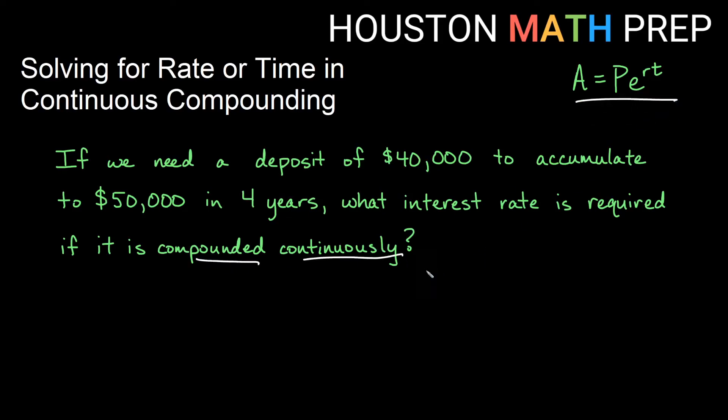So again, compounding continuously tells us we're using that. Our deposit of $40,000 is our P, our principal. We need to accumulate to an ending amount A of $50,000. Our t this time is four years. We need to know what interest rate. So that tells us right here that we are solving for r.